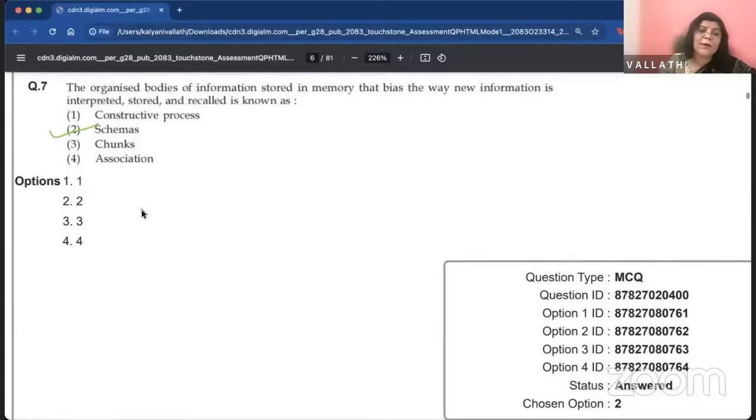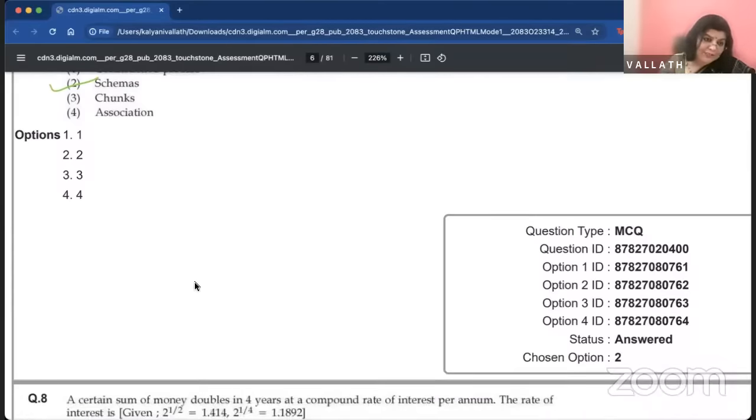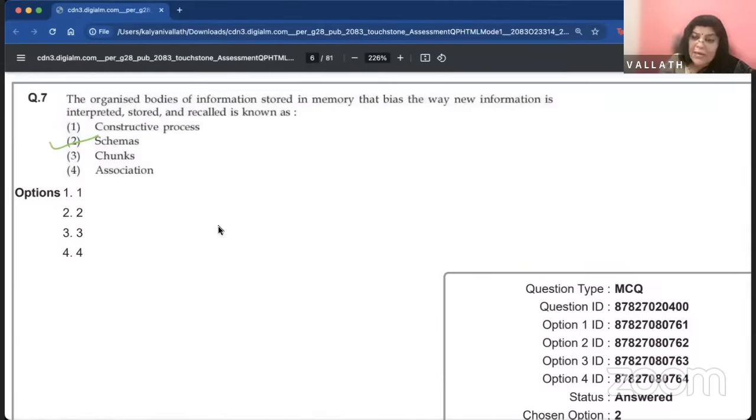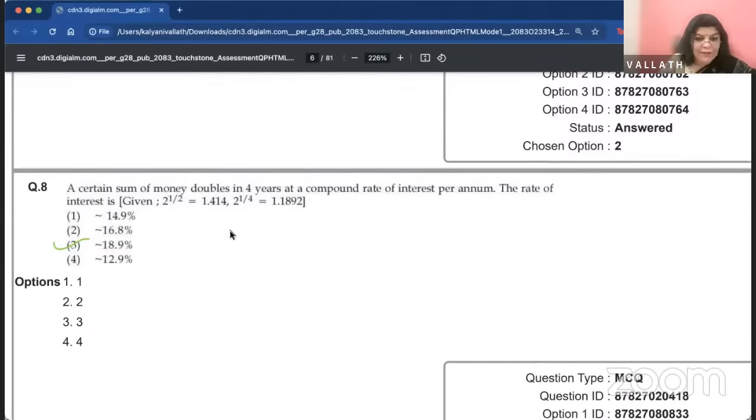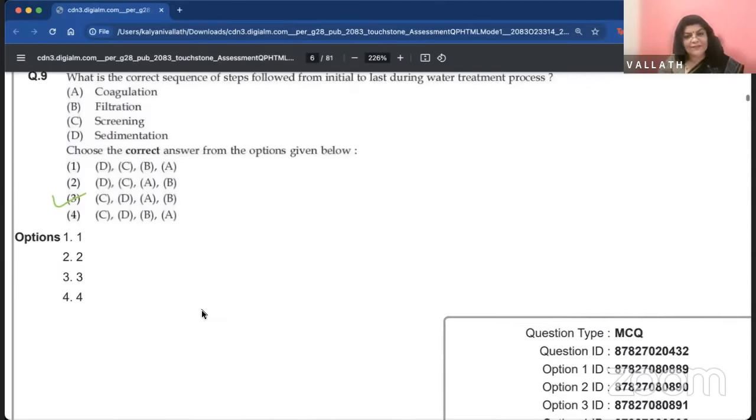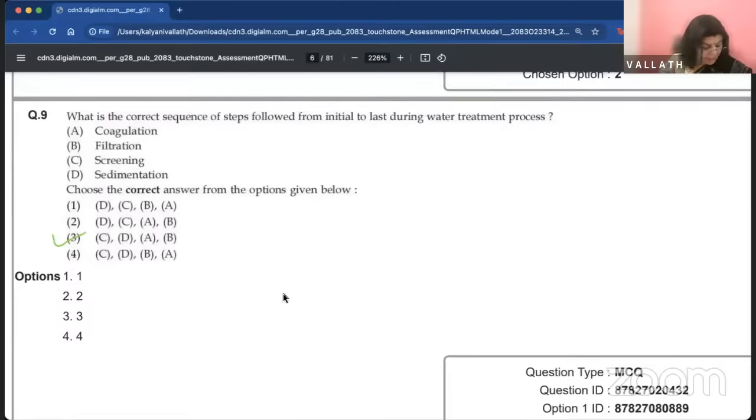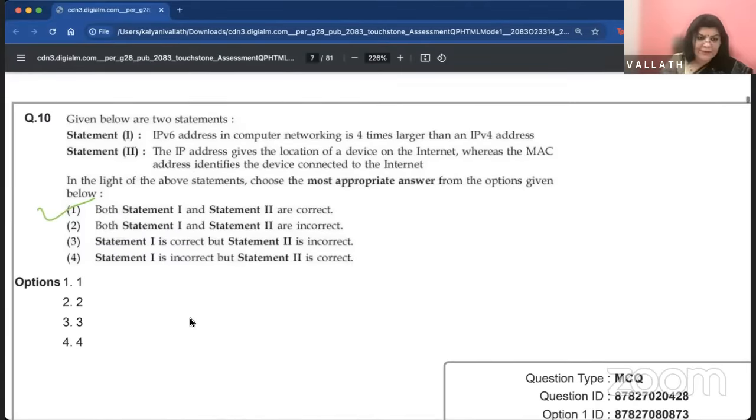The organized bodies of information stored in memory that bias the way new information is interpreted, stored and recalled is called schemas. So, I hope you will read extra about all this from now on. A certain sum of money doubles in four years at a compound rate of interest per annum. The rate of interest given is about 18.9%.